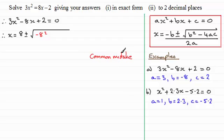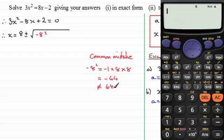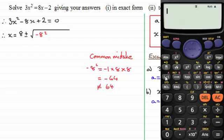Minus 8 squared like this means minus 1 multiplied by 8 multiplied by 8, and that is going to come to minus 64, not 64 as we would hope. If you don't believe me, just use the calculator. If you enter minus 8 and press the square button then equals, you can see you get minus 64.